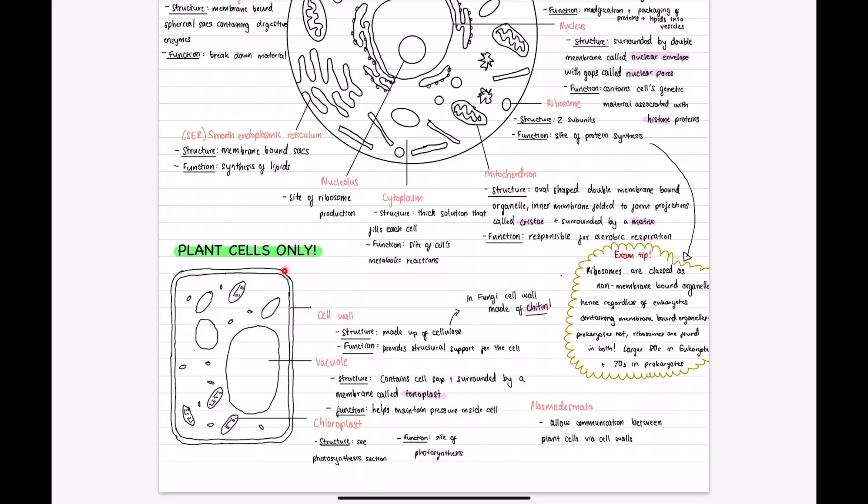The cell wall is a structure made up of cellulose and it provides the structural support for the cell. As a side note, the cell wall of fungi is made of chitin. Again, this is good to know in comparison questions.